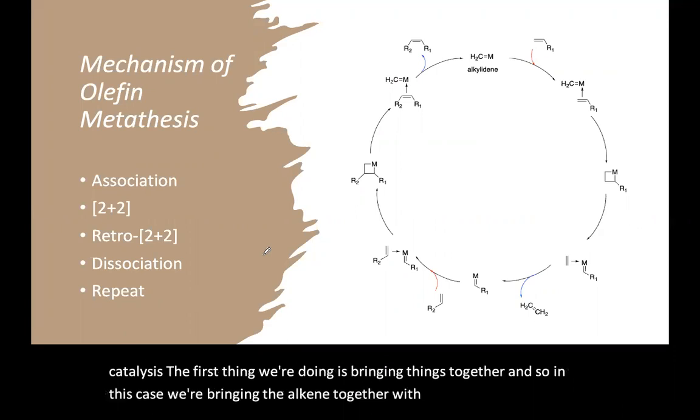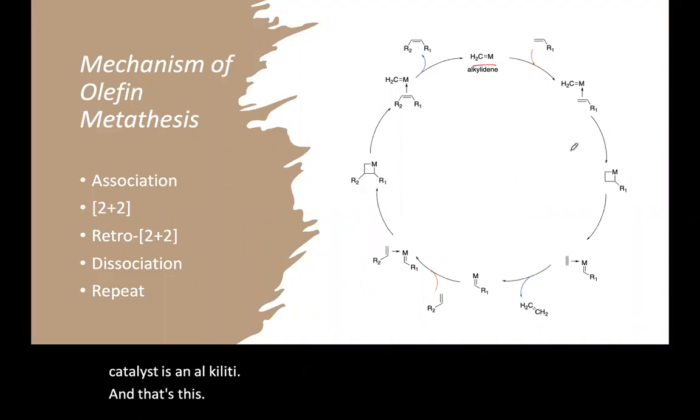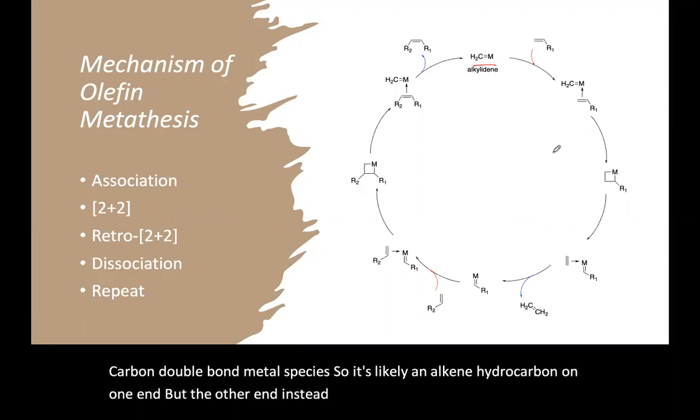And the catalyst is an alkylidene. That's this carbon double bond metal species. So it's like an alkene. We've got hydrocarbon on one end, but the other end, instead of being hydrocarbon, it's a metal. So a double bond between carbon to the metal.